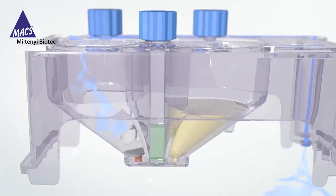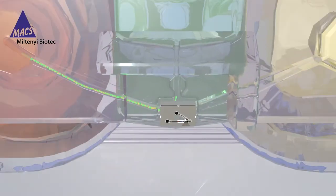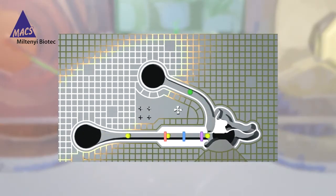After entering the microchannel, cells are interrogated by three lasers. Upon identification of a target cell, a magnetic pulse opens the microvalve, which then redirects the target cell into the positive collection chamber.